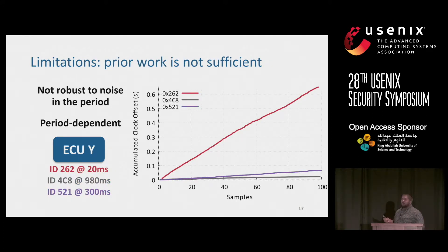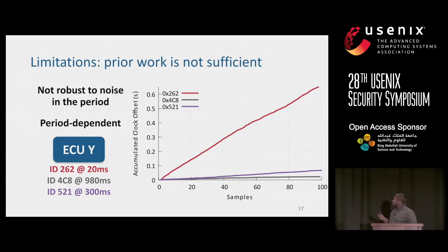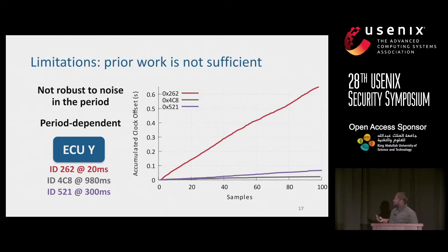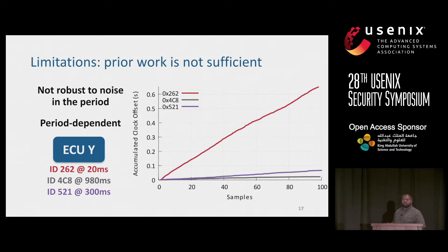Unfortunately, we found that prior work is not sufficient. The first problem is that it's not robust to noise in the period, which we find in automotive networks, because it is period dependent. As an example, another real ECU from a real car has three IDs transmitted at three different periods. The only conclusion you could draw from that graph is that there are three different ECUs sending one message each — which is not true.